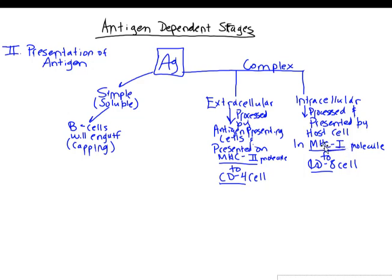Normally, immune cells ignore MHC class I molecules. But if an MHC class I molecule is presenting a foreign antigen, that indicates infection. The antigen is then presented to a CD8 cell — a cytotoxic T cell, or killer cell — and this is how the intracellular antigen gets addressed.